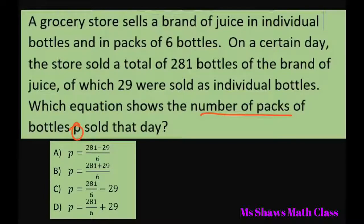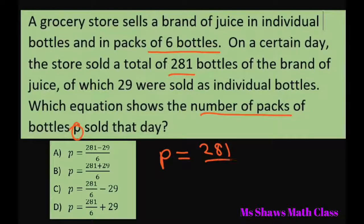So what you're going to do is write P equals the total 281, and they sold in packs of six bottles. So if they sold a total of 281, you divide that by six.